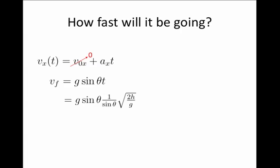Now notice that the sine in the numerator cancels the sine in the denominator, and the g that's over here, I can bring inside the square root, in which case it becomes a g squared, and I have 2h g squared divided by g, or I have that the final velocity is just the square root of 2gh.